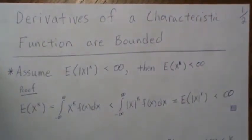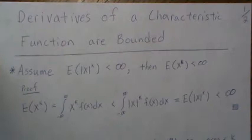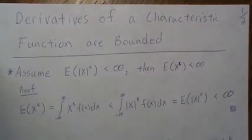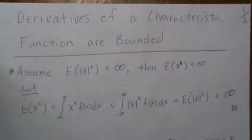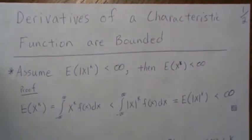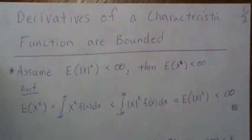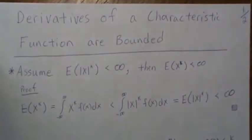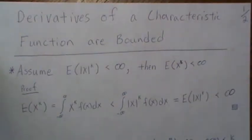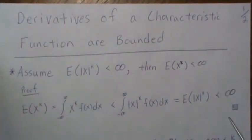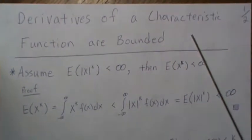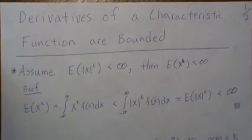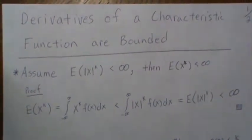Hello, this is the second video in a small series on characteristic functions, moment generating functions, and factorial generating functions. I'm trying to get out some of the background before I start in on that so it'll flow easier and quicker — I can just revert to these videos. Here we're going to look at the derivatives of the characteristic function and show that they are bounded, and I'm going to give a few background points before we jump into that.